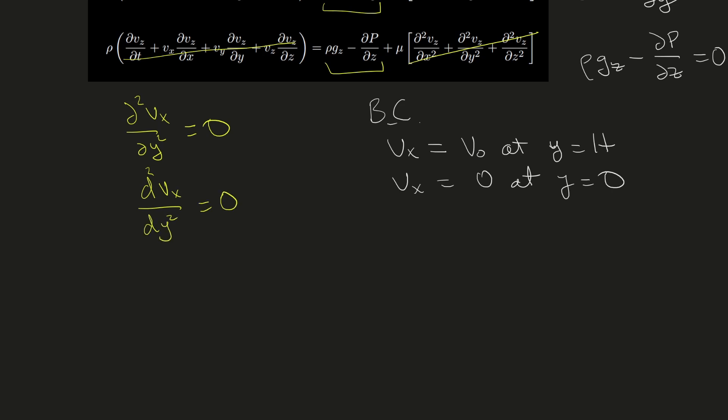The first step is to integrate once. Since this is the second derivative, we rewrite as dvx/dy = c₁. Then we separate variables and integrate again: dvx = c₁dy, giving us vx = c₁y + c₂.